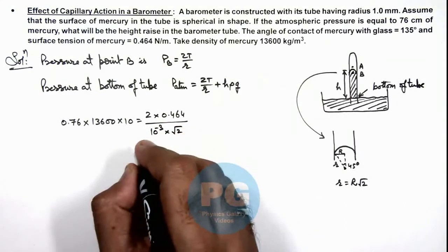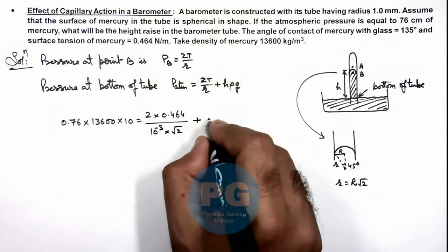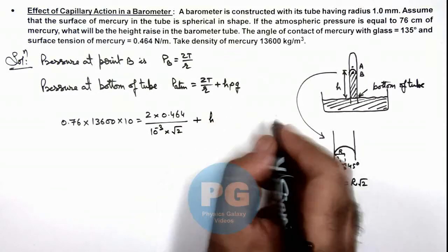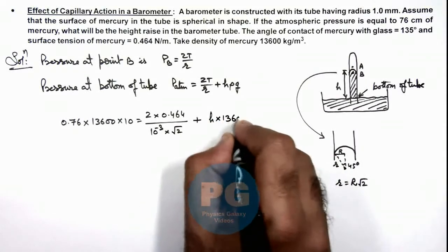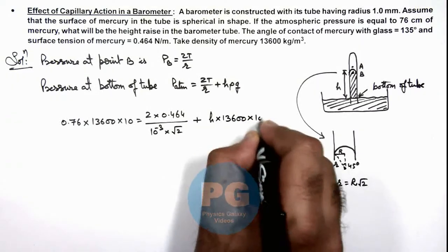Plus this is h, again the mercury density is 13,600 multiplied by g, which is 10.